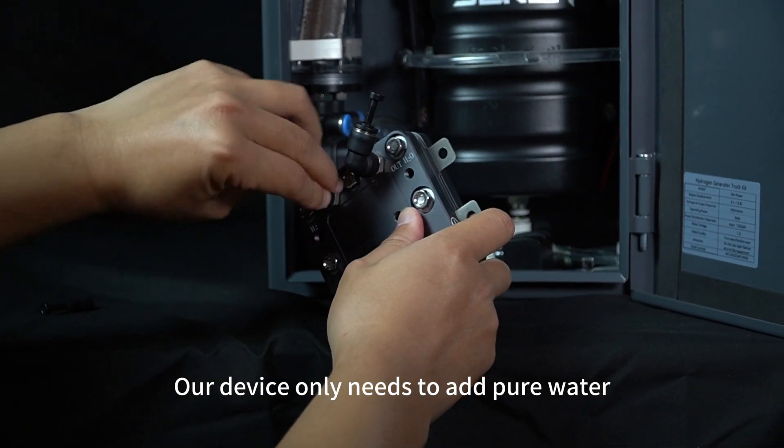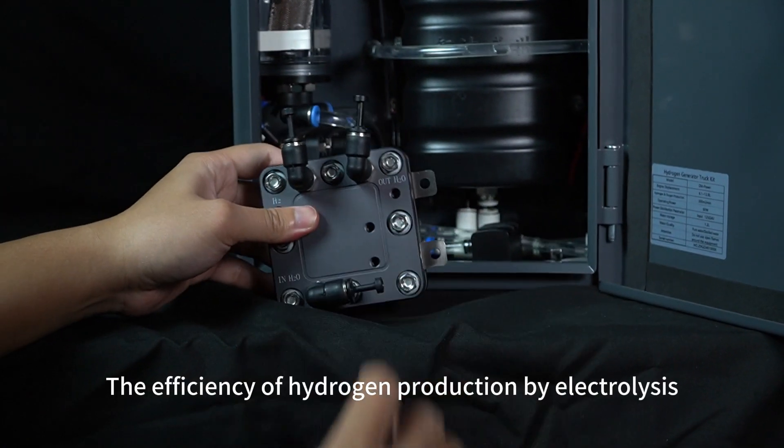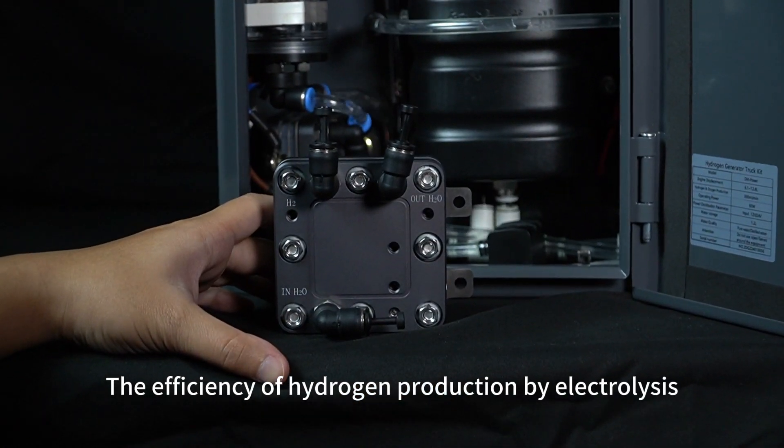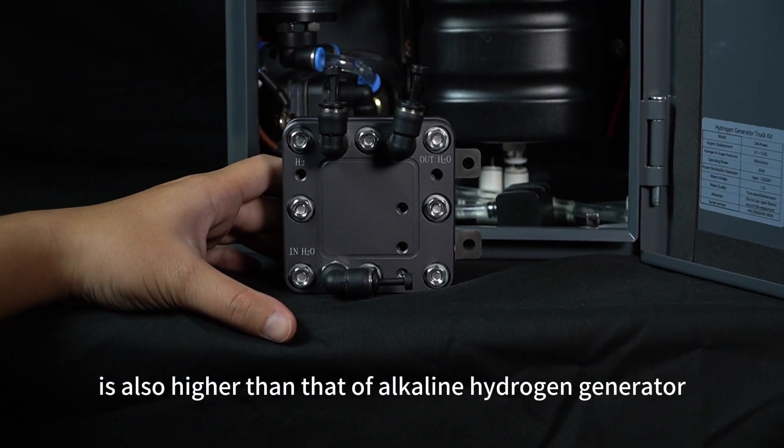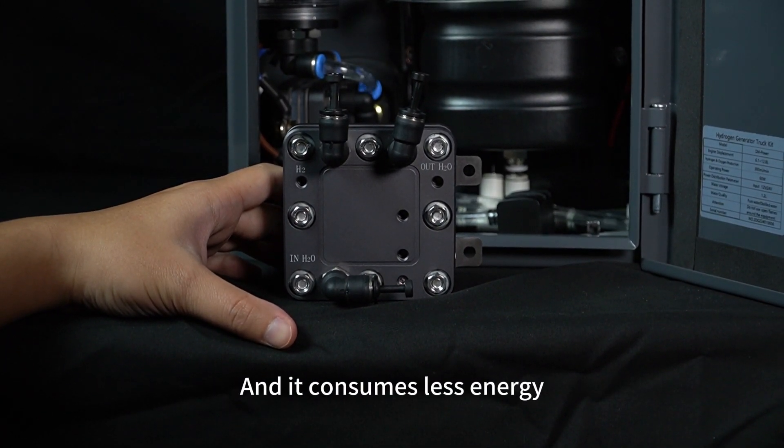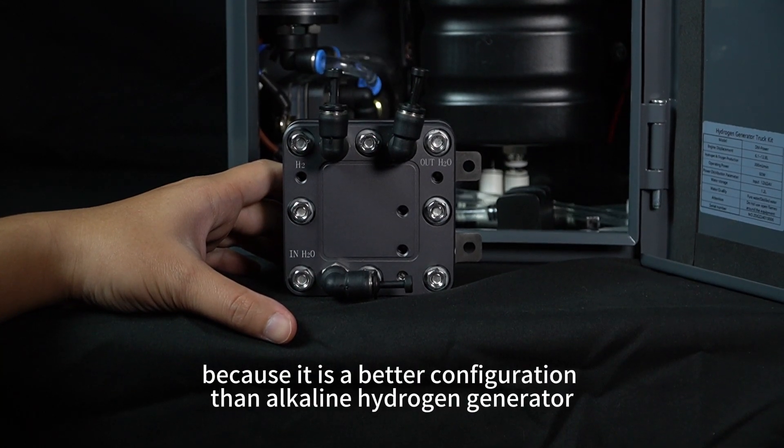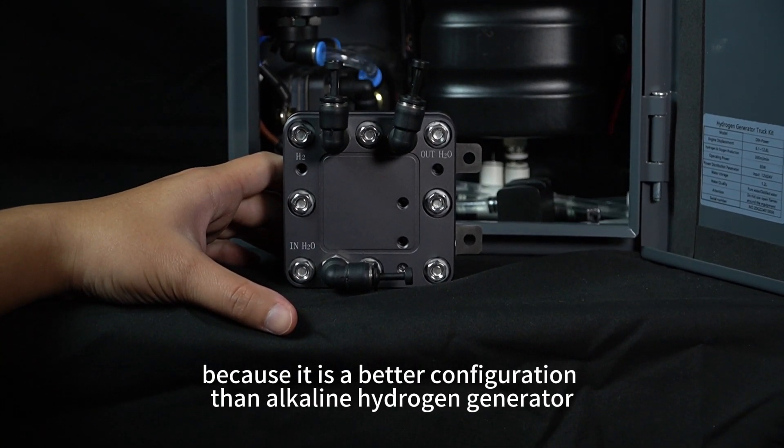Our device only needs to add pure water. The efficiency of hydrogen production by electrolysis is higher than that of alkaline hydrogen generators, and it consumes less energy because it is a better configuration.